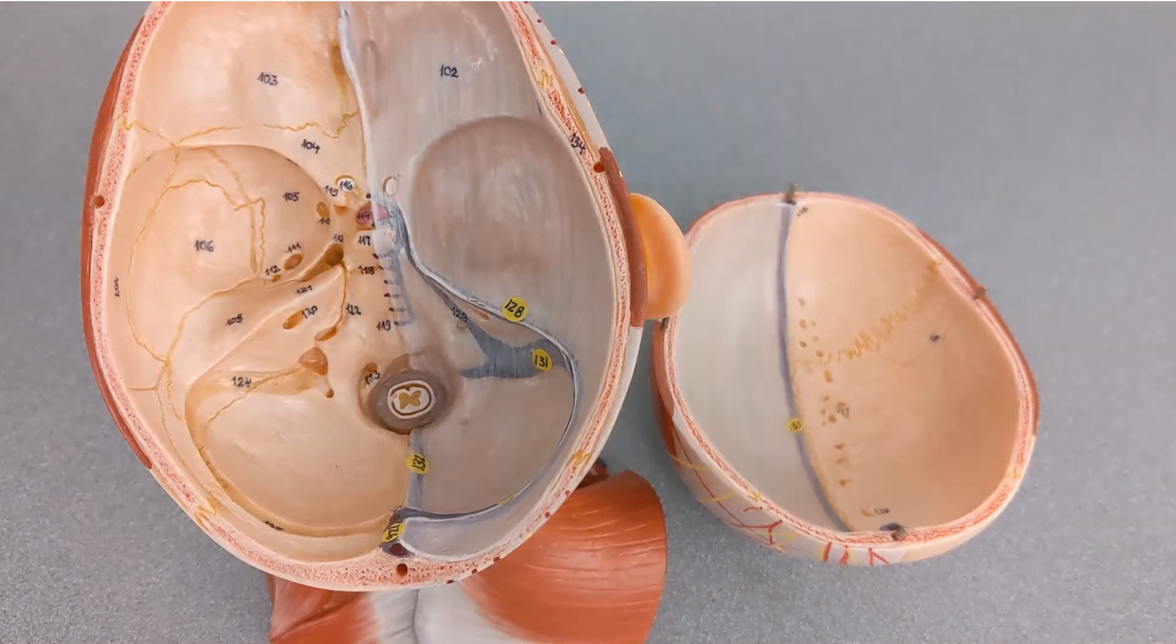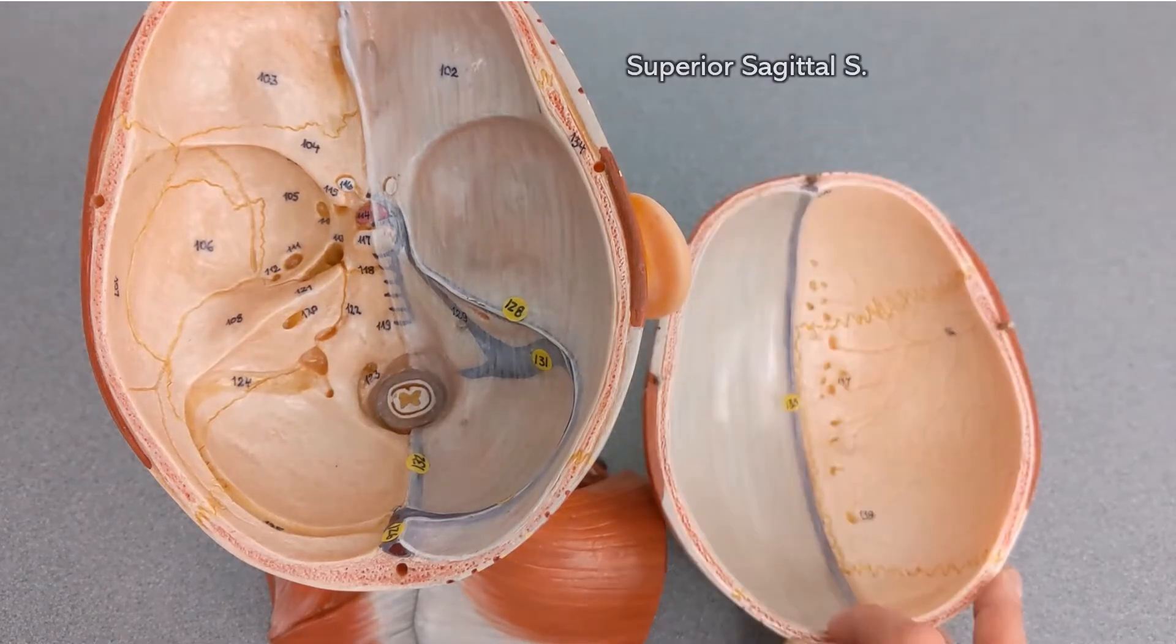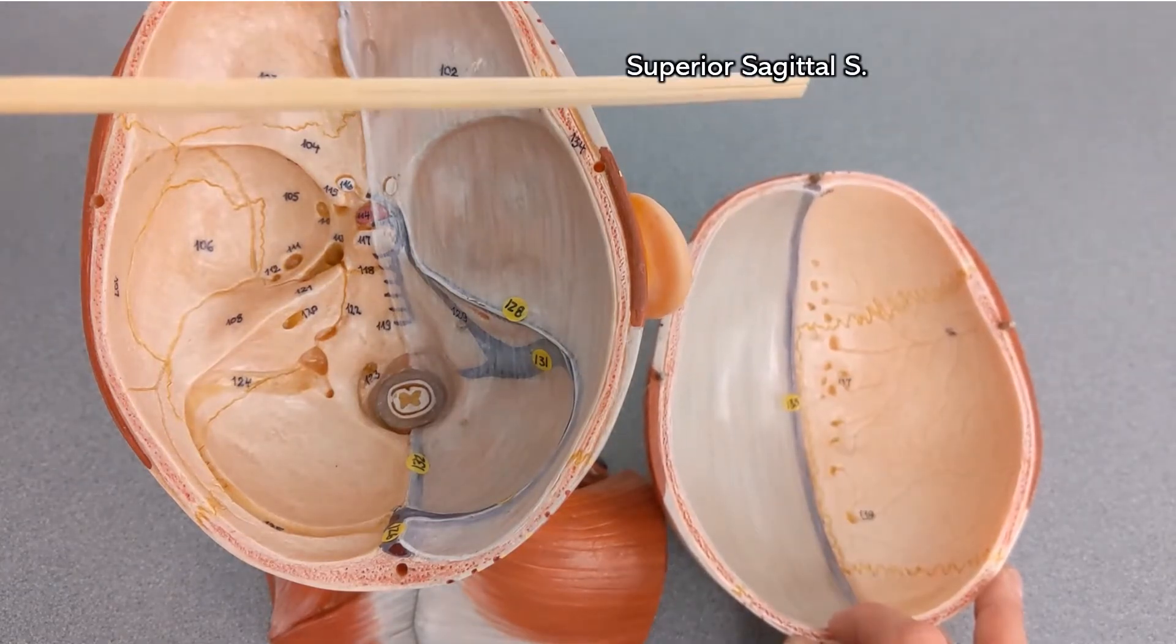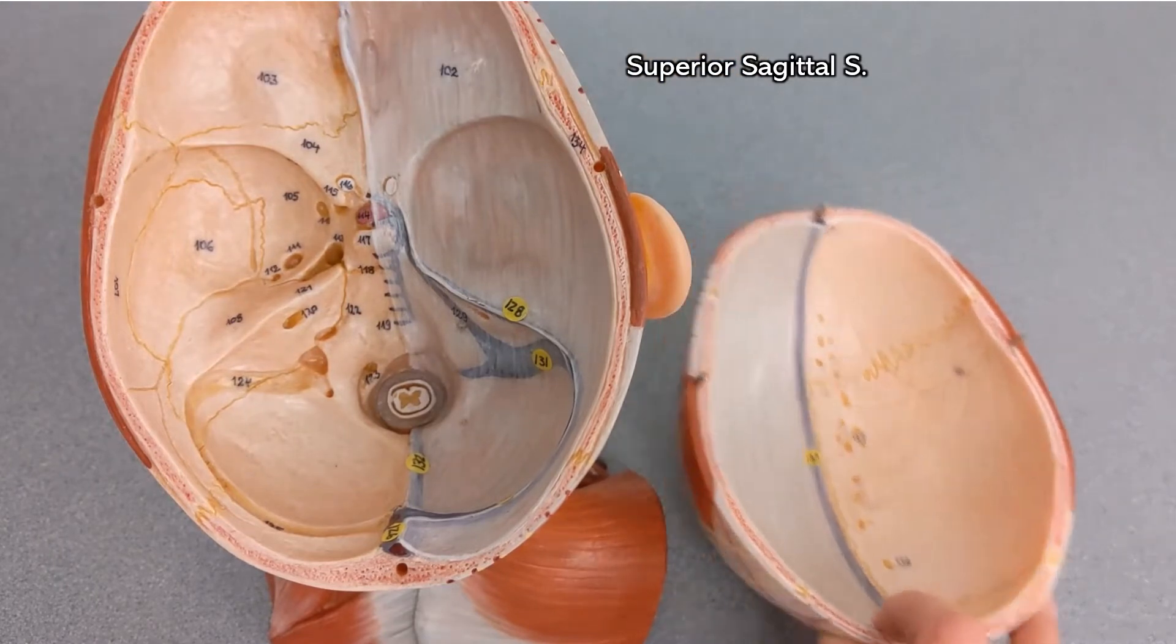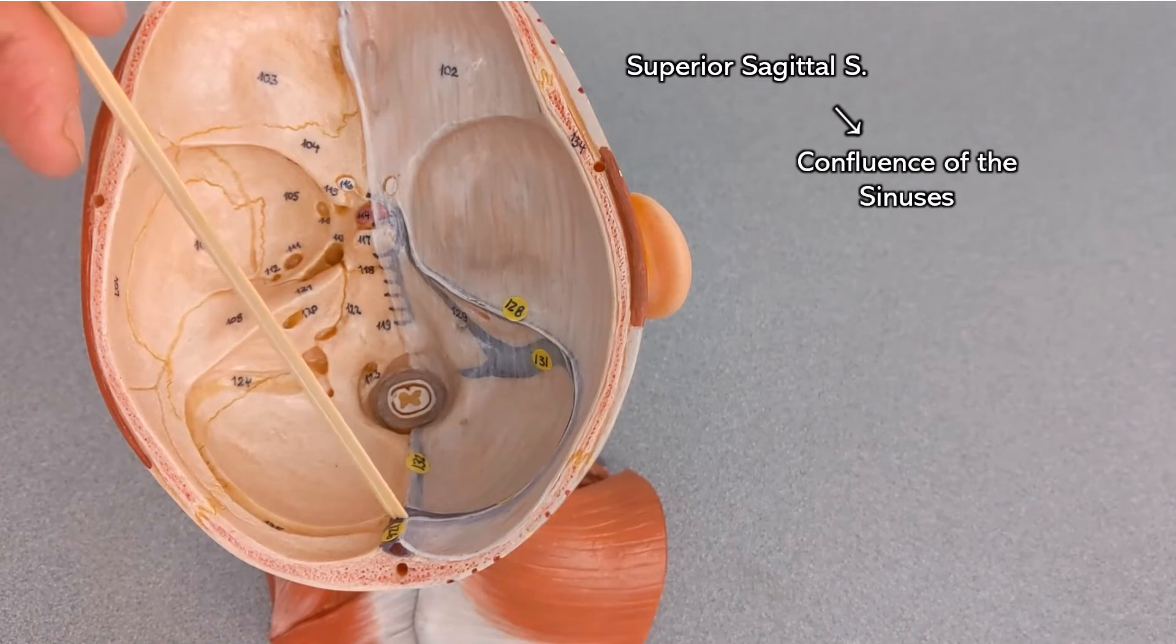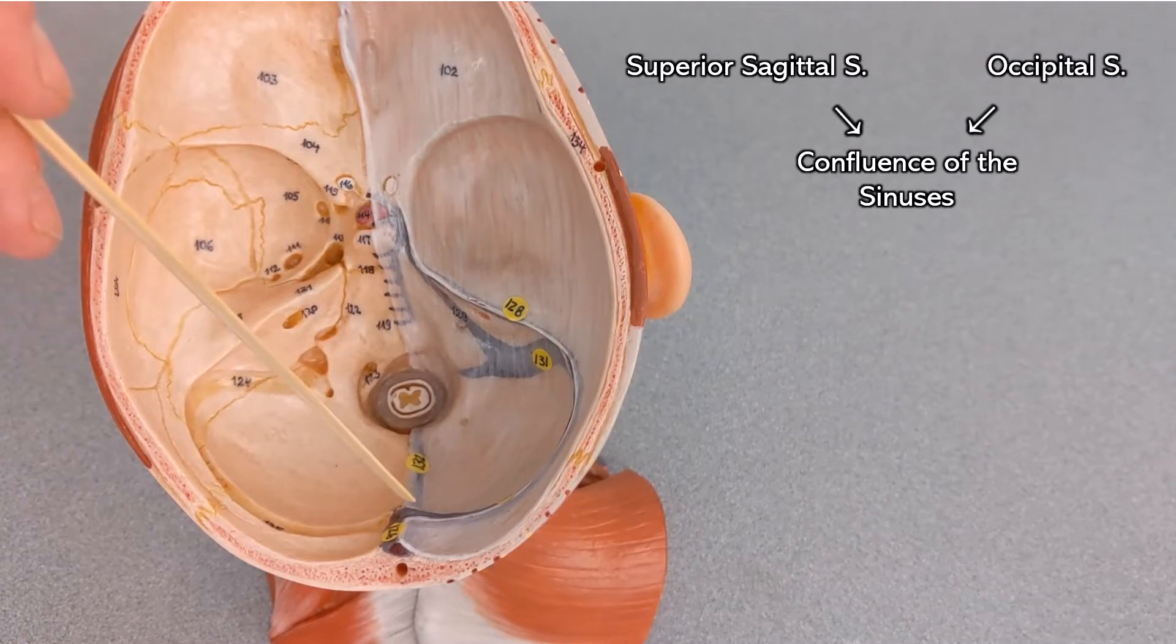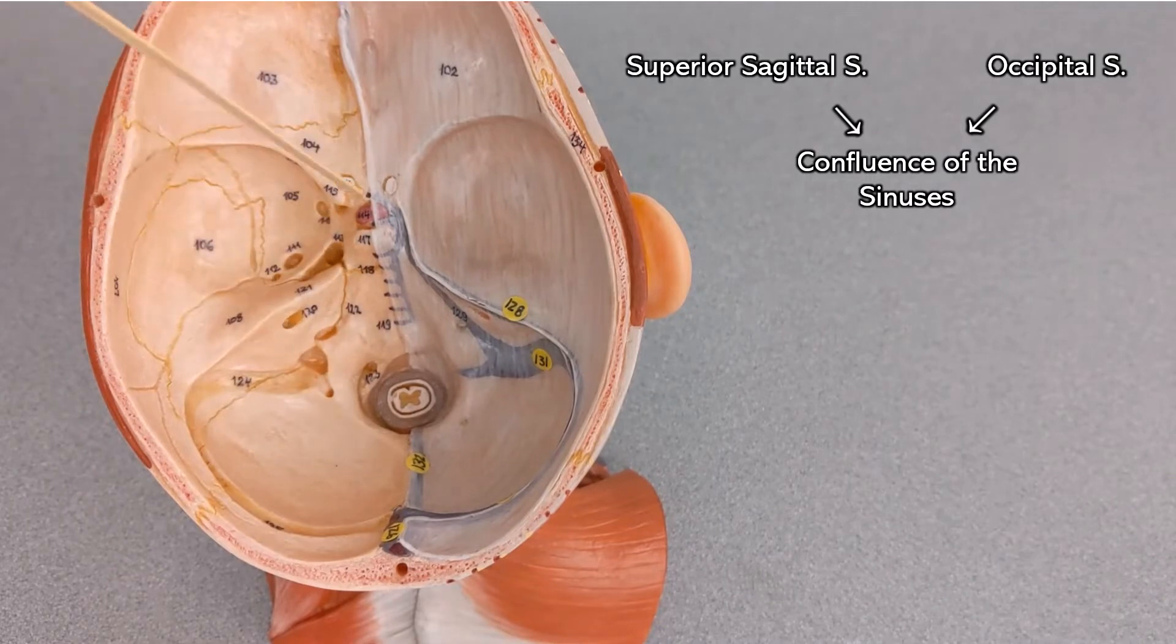So inside of Harold's skull we can see the superior sagittal sinus. That superior sagittal sinus comes down to here which is the confluence of the sinuses. A confluence is where things meet up. It's called that because the occipital sinus comes to here and there are some other sinuses not involved in our curriculum which also meet at the confluence of the sinuses.